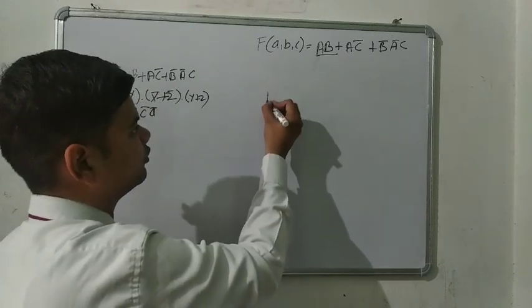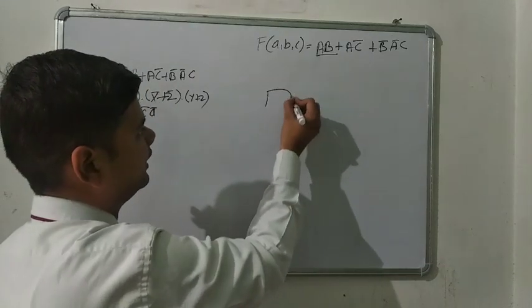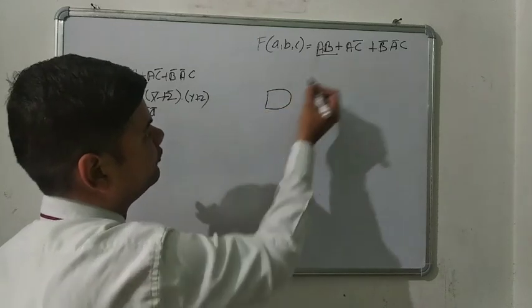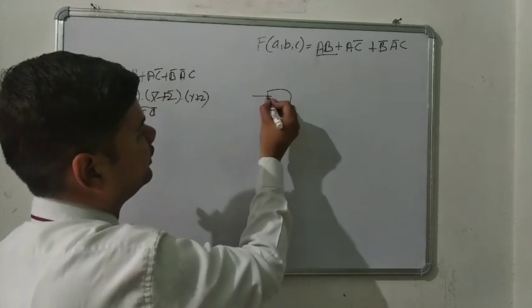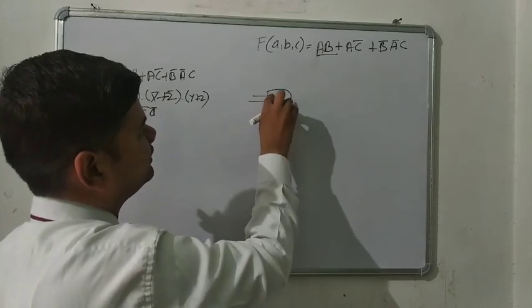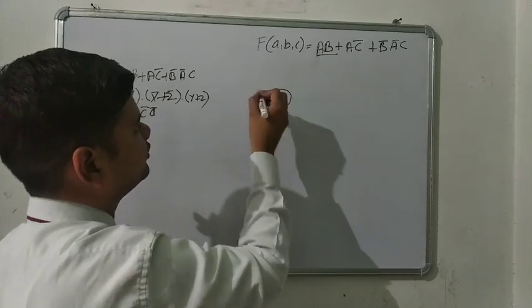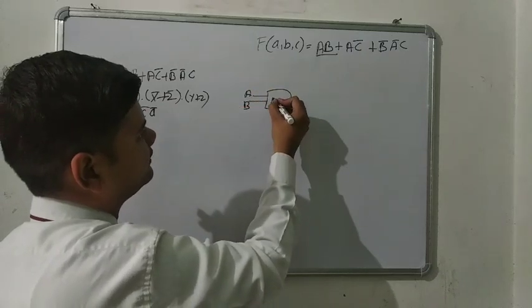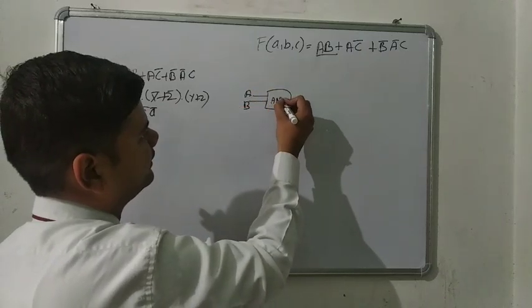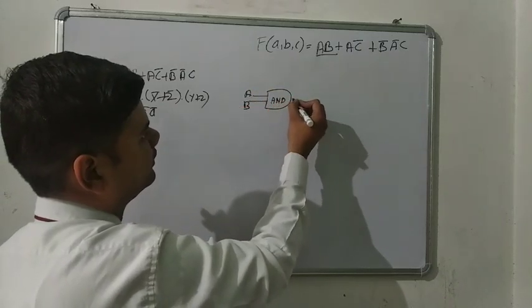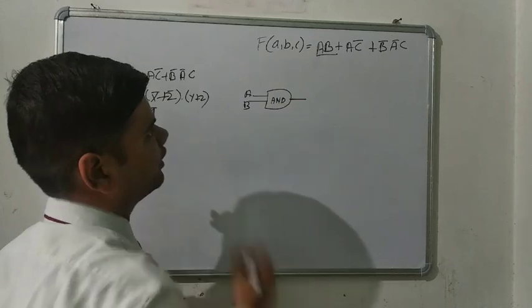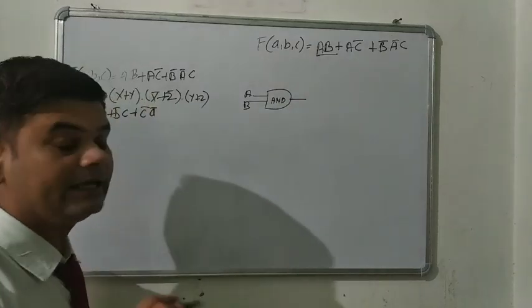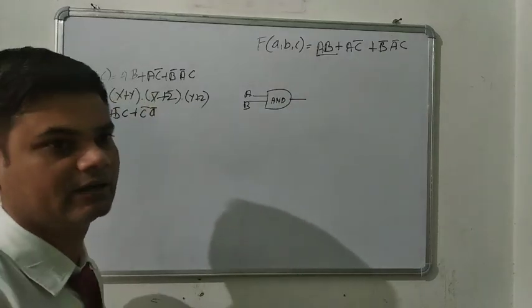So first we have to draw the AND gate. Here we are taking two inputs — that is A and B. Inside that is the AND gate. Now the second term is AC̄.